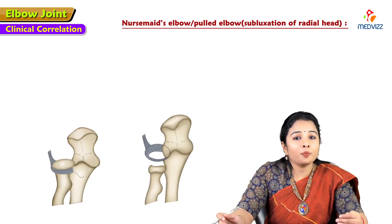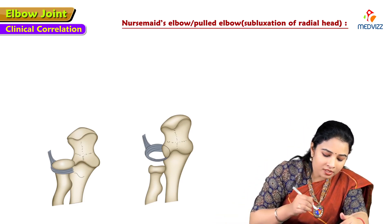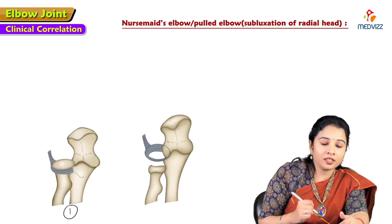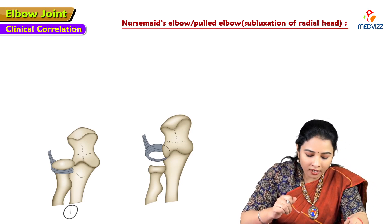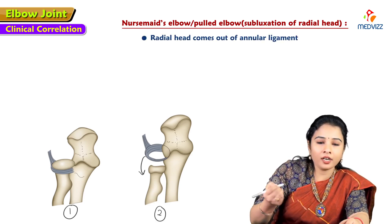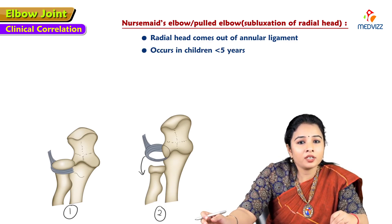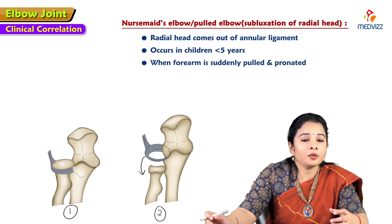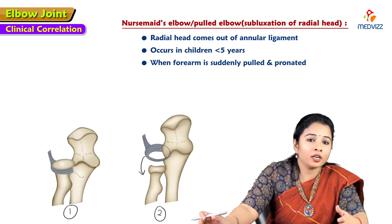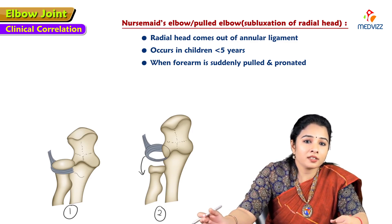Nursemaid's elbow, or pulled elbow, is a subluxation of the head of the radius. It commonly occurs in children below 5 years of age when the forearm is suddenly pulled and pronated, causing the head of the radius to slip out of the annular ligament.